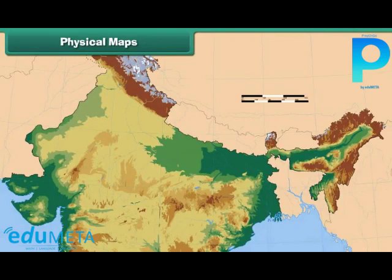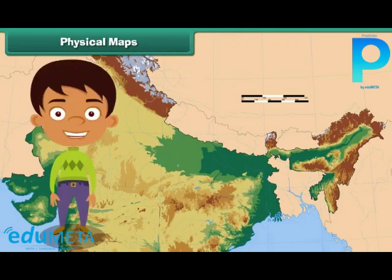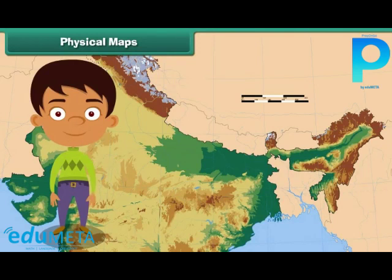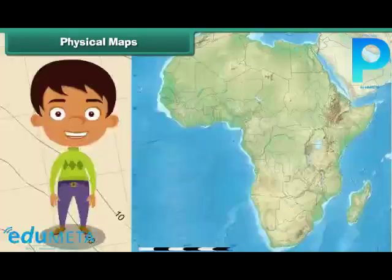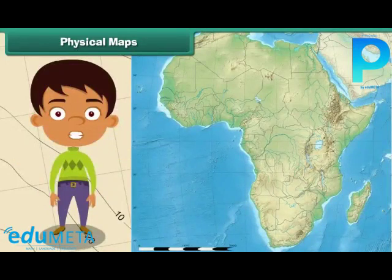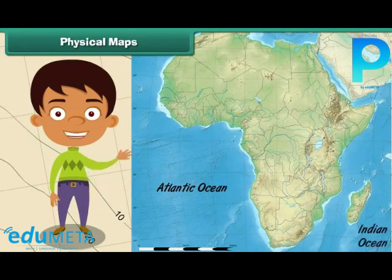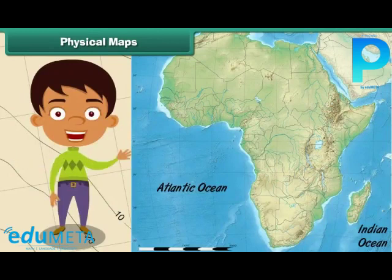Physical maps illustrate the physical features of an area such as mountains, rivers and lakes. Water bodies are usually colored blue in a physical map. Different colors are used to show different land elevations — green for lower elevations and orange or brown for higher elevations. For example, the physical map of Africa shows the African continent located between the Atlantic Ocean on the west and the Indian Ocean in the east. The African continent is also shown as sharing its northeast border with the Red Sea.